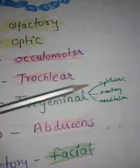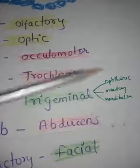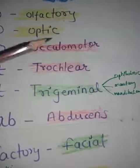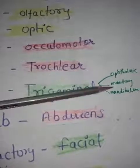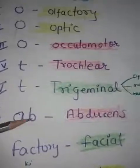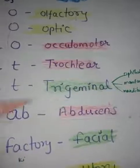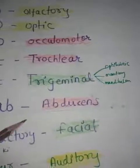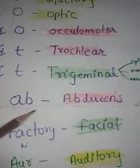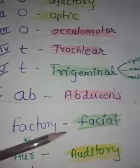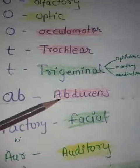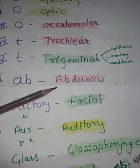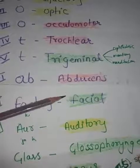The fifth cranial nerve is trigeminal, which has three parts: ophthalmic, maxillary, and mandibular. You don't need to learn all of that right now, but for better knowledge this is important. The fifth cranial nerve is also called the dentist's nerve. Then 'Ab' stands for abducens nerve.